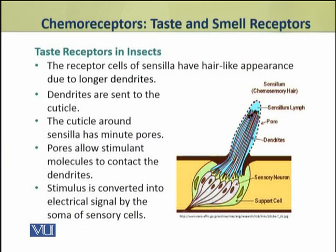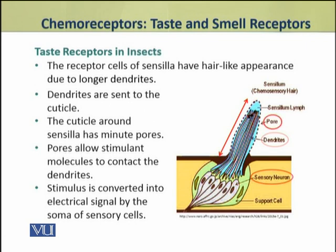The receptor cells of sensilla of insects have a hair-like appearance due to their longer dendrites. The dendrites are sent to the cuticle. This stimulus is converted into an electrical signal by the underlying soma of the sensory cells.